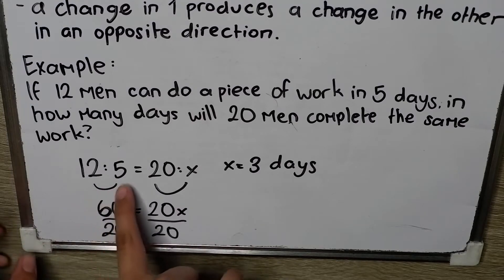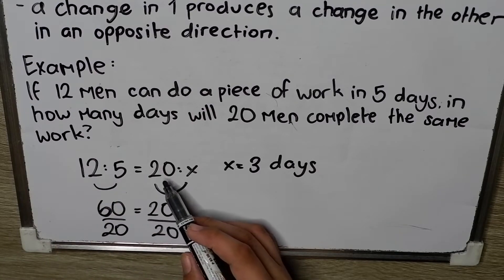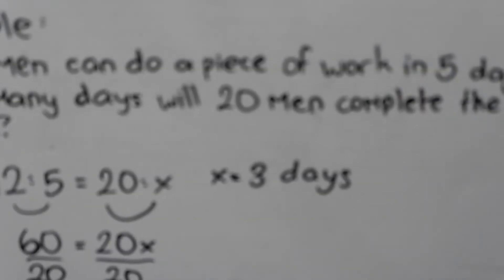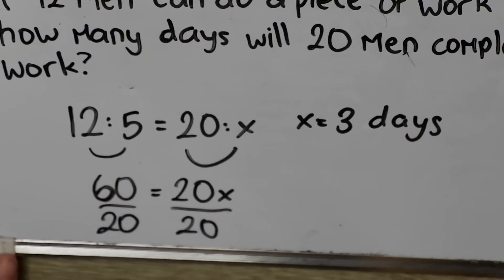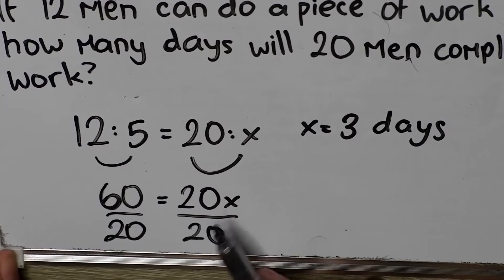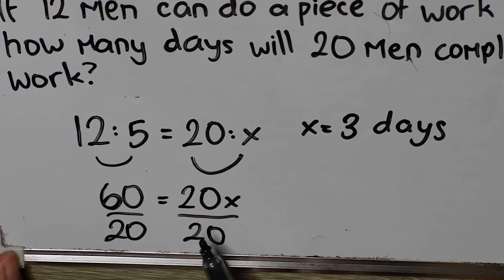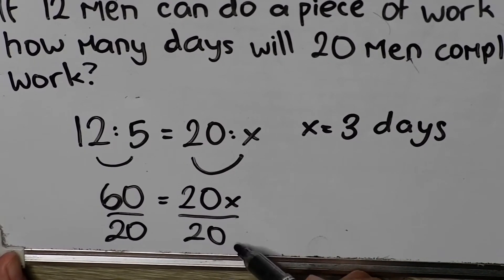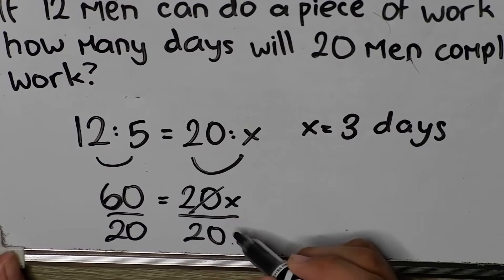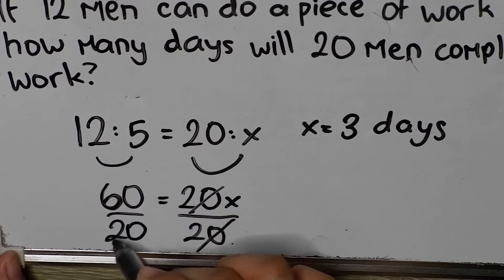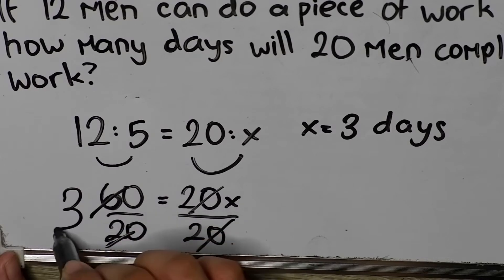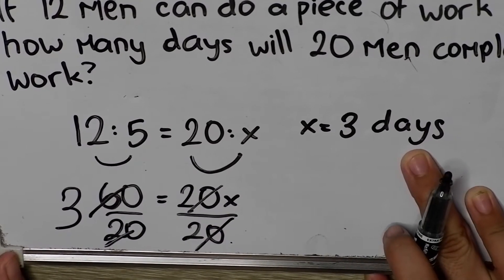So, we have 12 times 5 which is 60 and 20 times x. Just zoom so you can see. 20 times x equals 20 x. And then, we divide it by 20 so we get the cancel. So, and then, we have x equals 3 days.